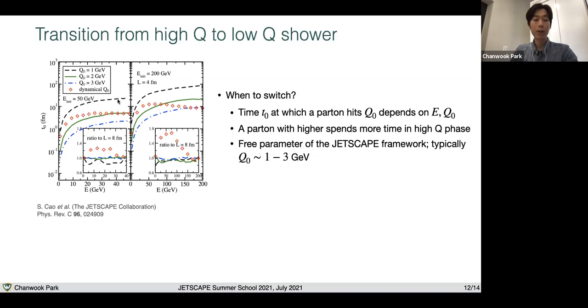When we set Q0 to one GeV, in most cases, the switching time is comparable to the size of the QGP created. On the other hand, if you set it to three GeV, then the switching time is order of like one femtometer, or in extreme case is like 10 femtometer. Another thing one can notice is that the particle with higher energies stays more in the higher virtuality phase, while the particle with lower energy immediately moves to the lower virtuality phase.